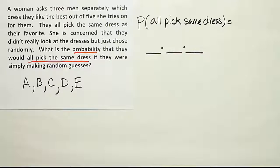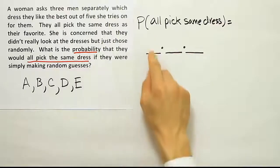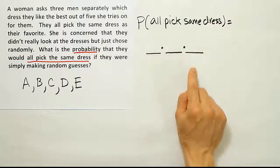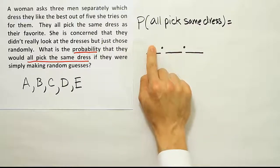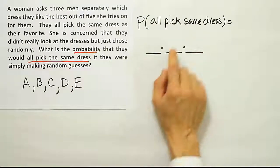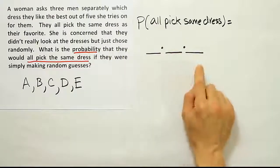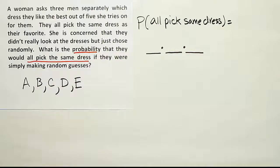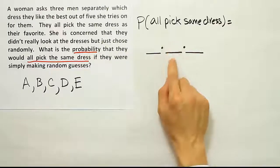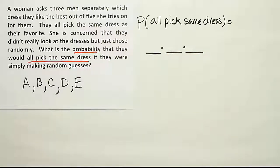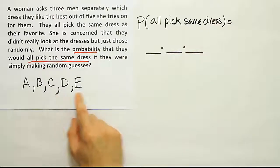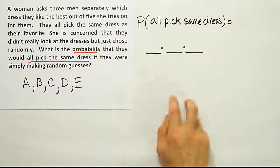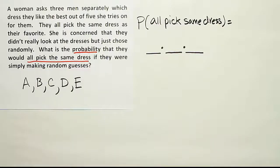That's five scenarios total, and each scenario is one fifth times one fifth times one fifth — because there is one specific dress out of five, and all three must pick it. Whether it's dress A or dress B, there's one dress out of five for each man, giving one fifth each. There are five different sets of (one fifth × one fifth × one fifth). Adding them all together gives us our answer.